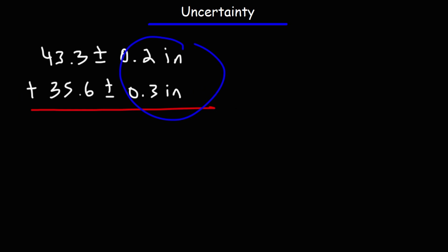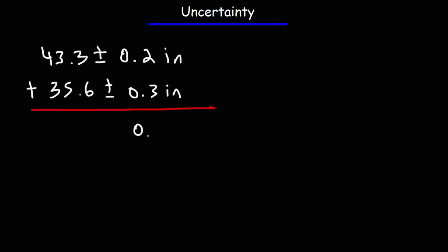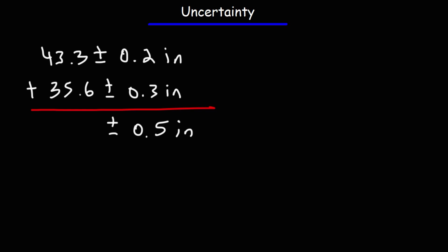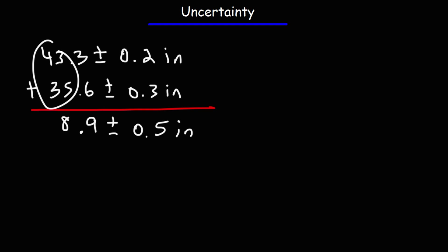Let's go ahead and begin. Since we're adding, the uncertainty is 0.2 plus 0.3, which is 0.5. Now we need to add the two measured values: 43.3 plus 35.6. 3 plus 6 is 9, 3 plus 5 is 8, 4 plus 3 is 7. So the answer is 78.9 plus or minus 0.5 inches.